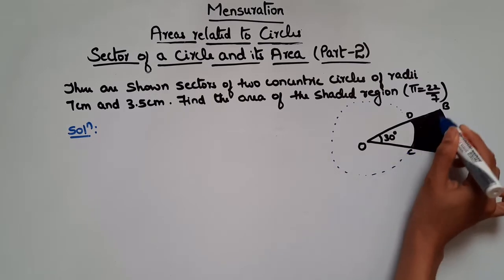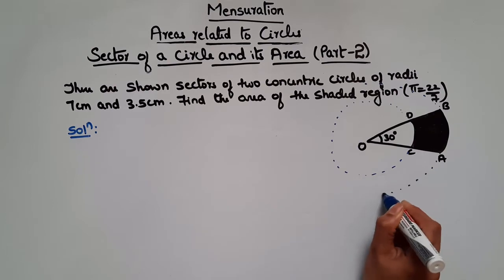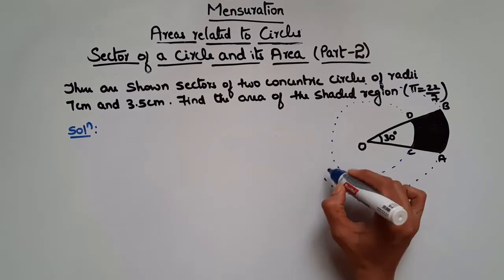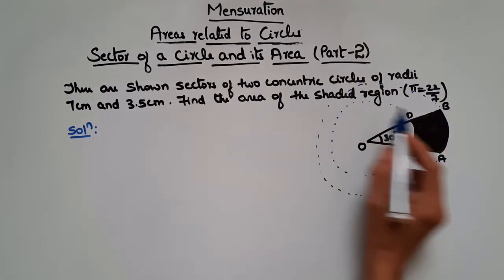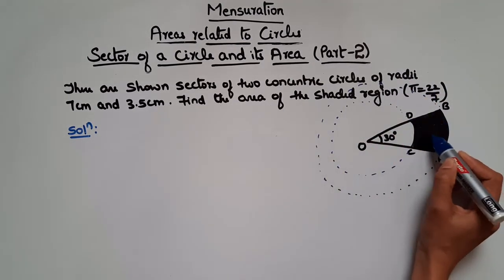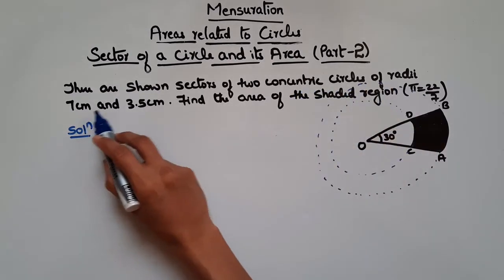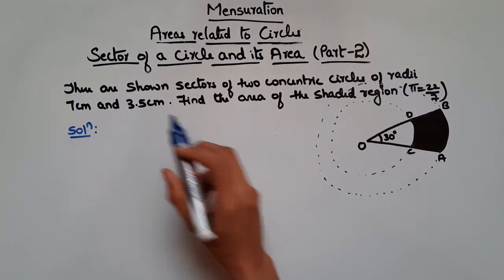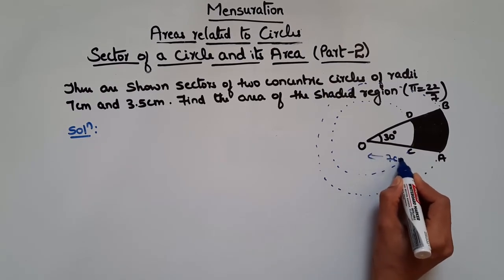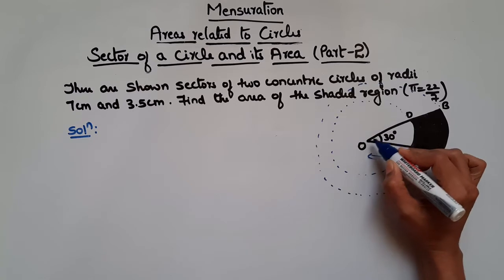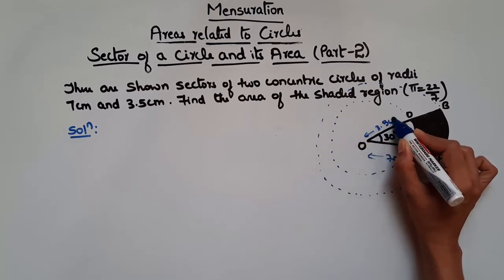So concentric circles have the same center but different radii. We have to find the area of the shaded region. Here the radii of these 2 concentric circles are 7 cm and 3.5 cm. So OA is 7 cm and the radius of the smaller circle is 3.5 cm.